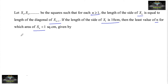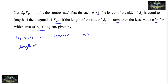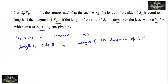So what is given in the question? s1, s2, s3, and so on are the squares where n is greater than or equal to 1. The length of the side sn is equal to the length of the diagonal of s(n+1). And the length of the side s1 is given as 10 cm.